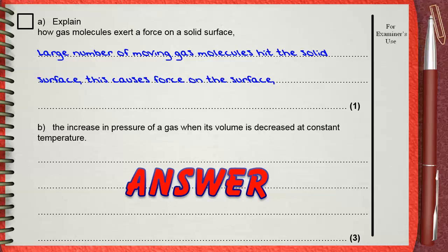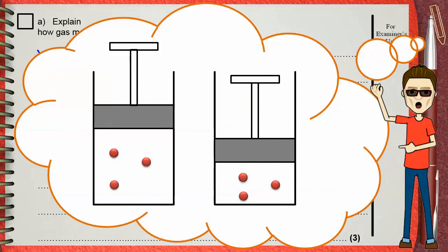This is the same amount of gas in two different cylinders. The cylinder on the left has a big volume, but the cylinder on the right has a small volume.